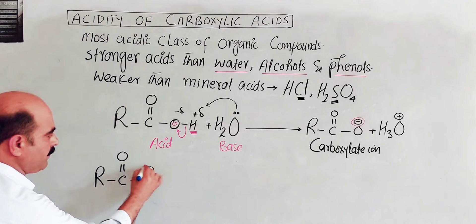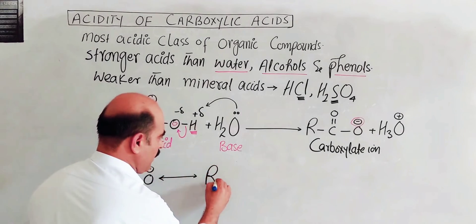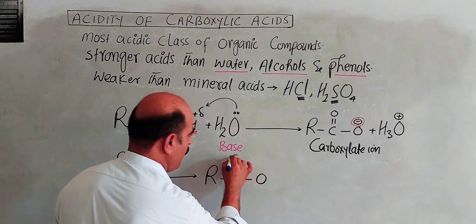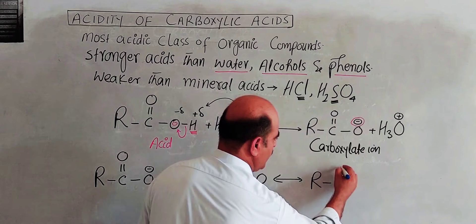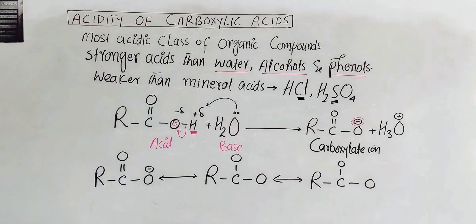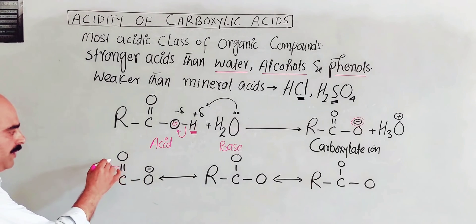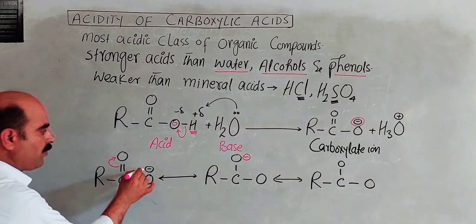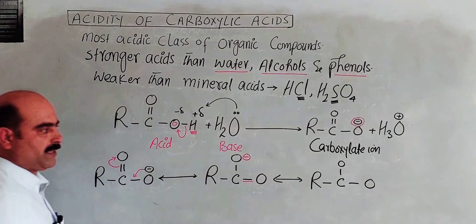The carboxylate ion has a double bond O and O-negative, and the charge is distributed over R, C, O, and O — giving three resonating structures. If the bond breaks and the electrons are altered, the negative charge resides on oxygen, and the electrons shift into the double bond. This is one possible resonating structure.